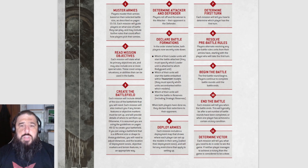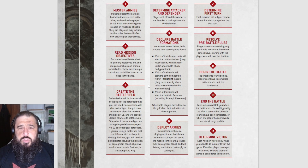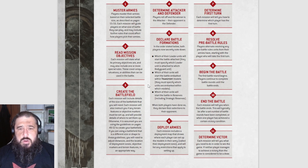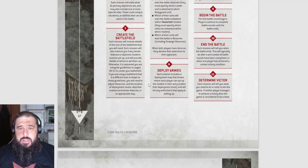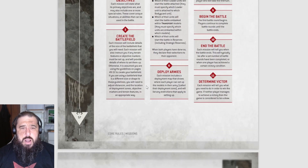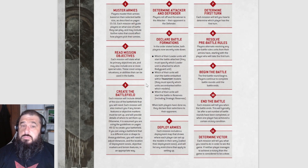Step seven: determine the first turn - each mission will tell you how to determine which player goes first. Step eight: resolve the pre-battle rules - players alternately resolve any pre-battle rules their units have, starting with the player who took the first turn. Step nine: begin the battle - the first battle round begins and players continue to complete battle rounds until the battle ends.